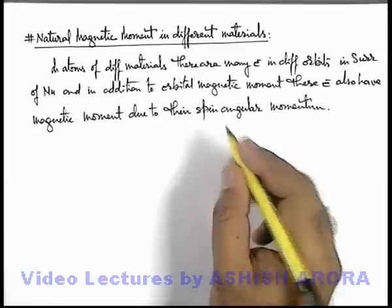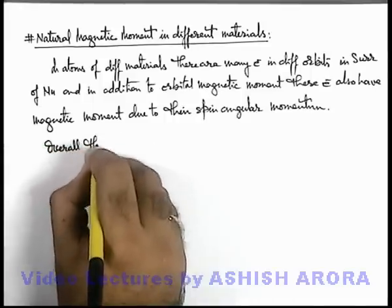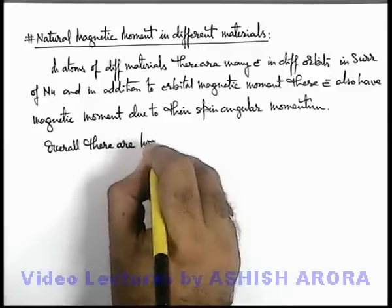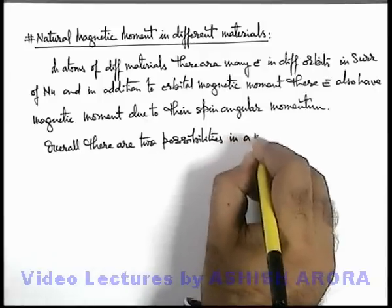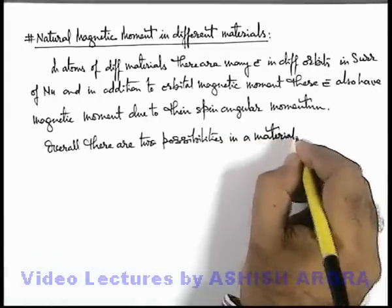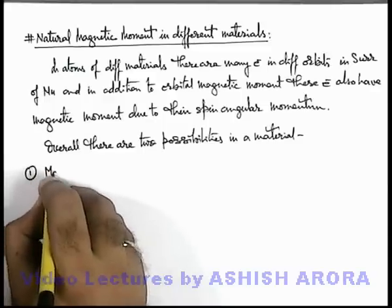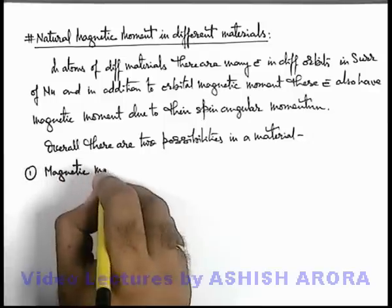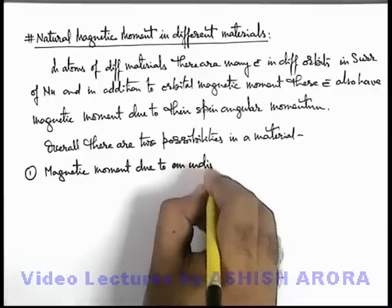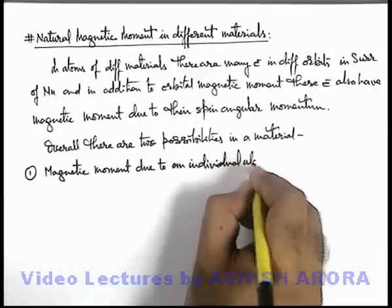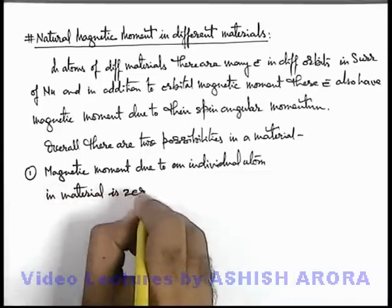Now if we talk about a general material, there are two possibilities we can write here overall with respect to the magnetic moment. The very first one is: the magnetic moment due to an individual atom in the material is zero.